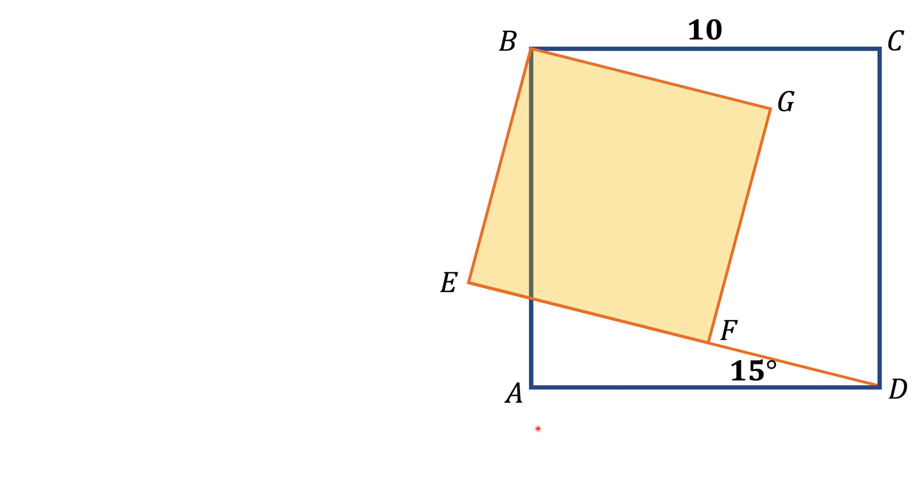First of all, let's draw a diagonal of the big square, BD. That diagonal will be 10√2 by Pythagorean theorem.